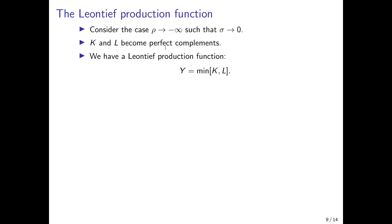Now let's consider the special case of a Leontief production function, obtained when rho tends to minus infinity so the elasticity of substitution between capital and labor tends to zero and capital and labor become perfect complements. We cannot increase output by increasing just one of the two production factors. Output is determined by the lower of the two input amounts — capital and labor. If we increase K but hold L constant, then L sets the limit for what can be produced.